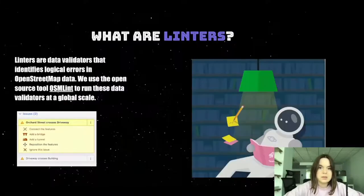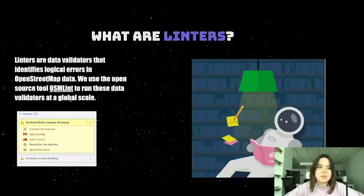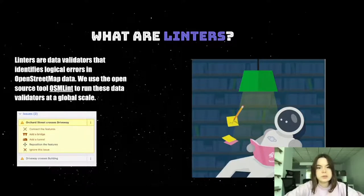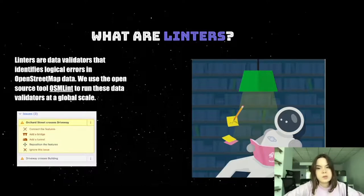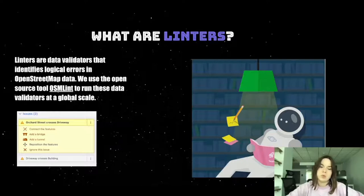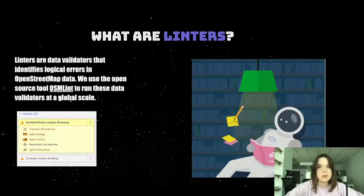Next, let's talk about linters. Linters are data validators that identify logical errors in OpenStreetMap data. We use the open source OSM lint tool to run these data validators at a global scale. For example, when you are mapping in OSM and do something wrong, you will see a warning which gives you an opportunity to fix your mistake before saving.